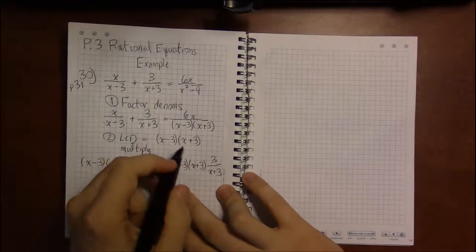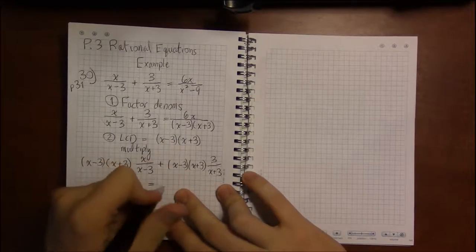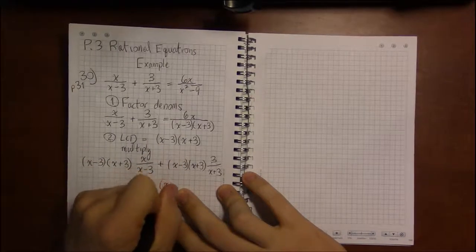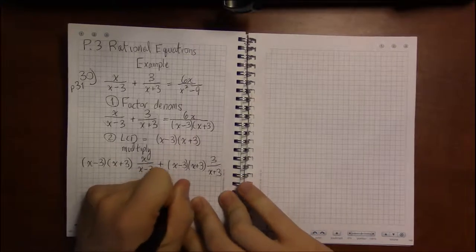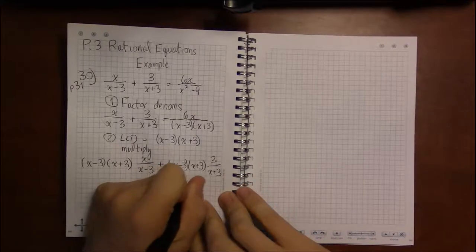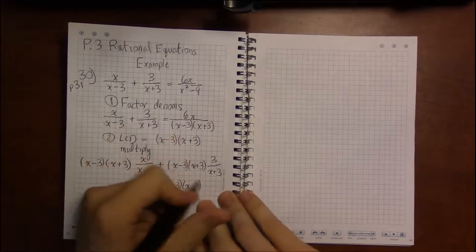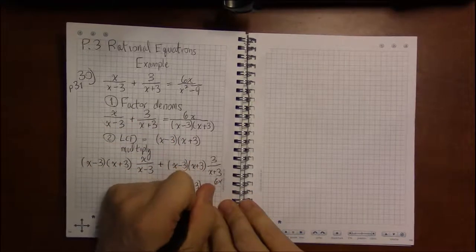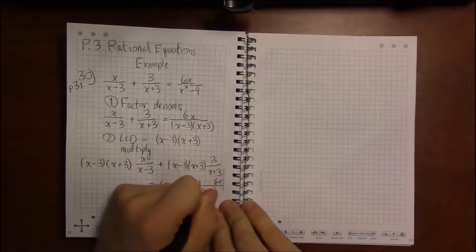And then on the right-hand side of the equation, we'll have the LCD, x minus 3 times x plus 3, times the right-hand side, 6 over basically the LCD, x minus 3 times x plus 3.